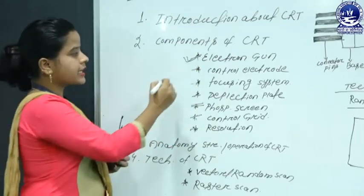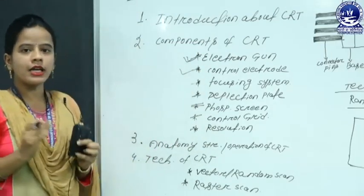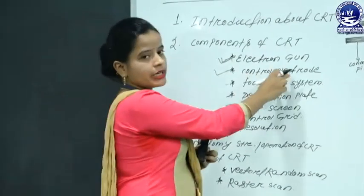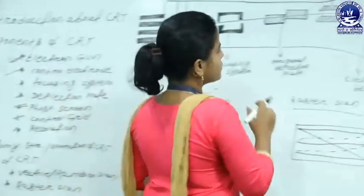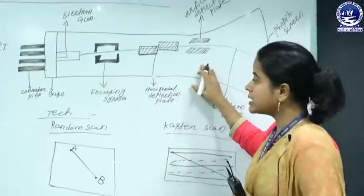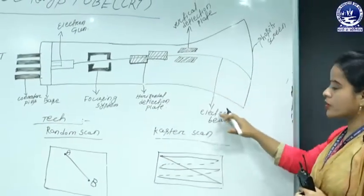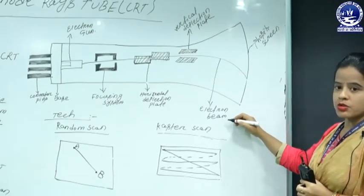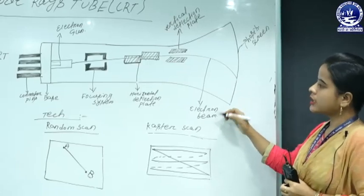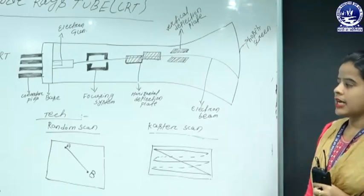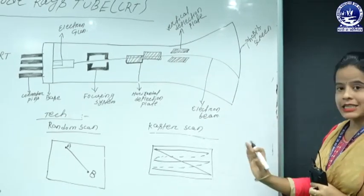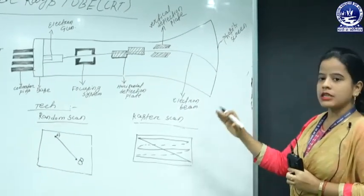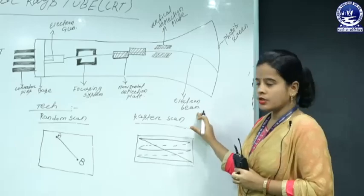Now going to the second component — that is your control electrode. What is a control electrode? Generally, the control electrode is used whenever we have to display any types of images through the help of electron beams. In this case, how the electron beams are turned on and turned off is handled through the control electrode. In single words, the control electrode is used for the turn on and off purpose of the electron beams.